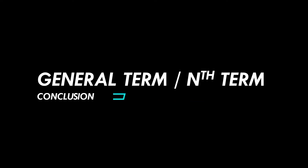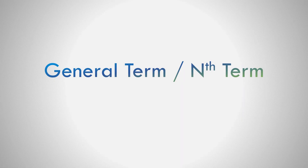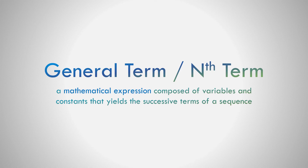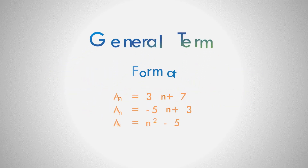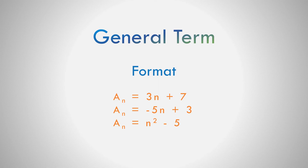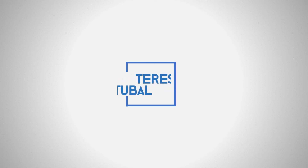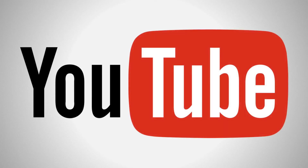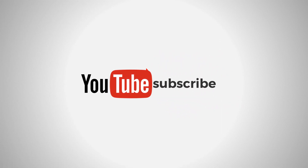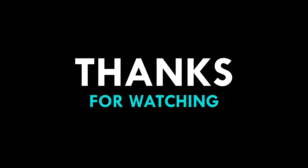Let us recall the general term or nth term of the sequence. It is a mathematical expression composed of variables and constants that yields the successive terms of a sequence. Examples: a sub n equals 3n plus 7; a sub n equals negative 5n plus 3; a sub n equals n squared minus 5. Enjoy learning — I'm Teresa Tuval. Thank you so much!